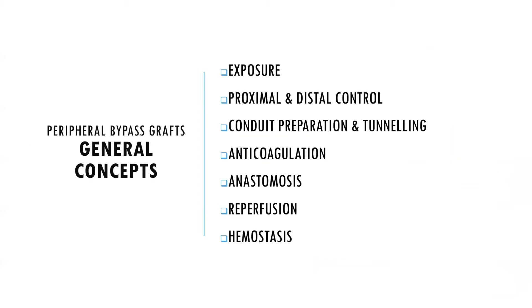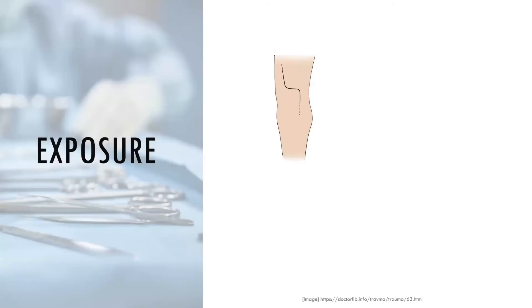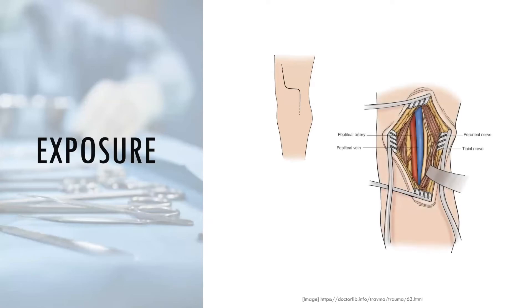General concepts of vascular bypass graft surgery include: exposure of the vessels involved, proximal and distal vascular control, preparing the conduit or graft, tunneling, anticoagulation, fashioning the anastomosis, reperfusion, and ensuring hemostasis. Adequate exposure of vessels is done through careful dissection of the overlying and surrounding tissue. Enough of the vessels should be exposed to allow for clamp placement and to fashion the anastomosis.